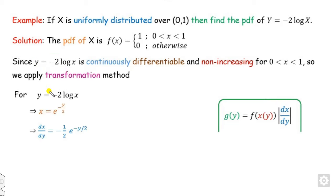Example 9: X has a given pdf and you need to find the pdf of Y. Write the expression, apply the transformation method, find x from y, calculate dx/dy, determine the limit of Y from the limit of X, note that the value is always positive so no modulus is needed, substitute directly, and obtain the required pdf.